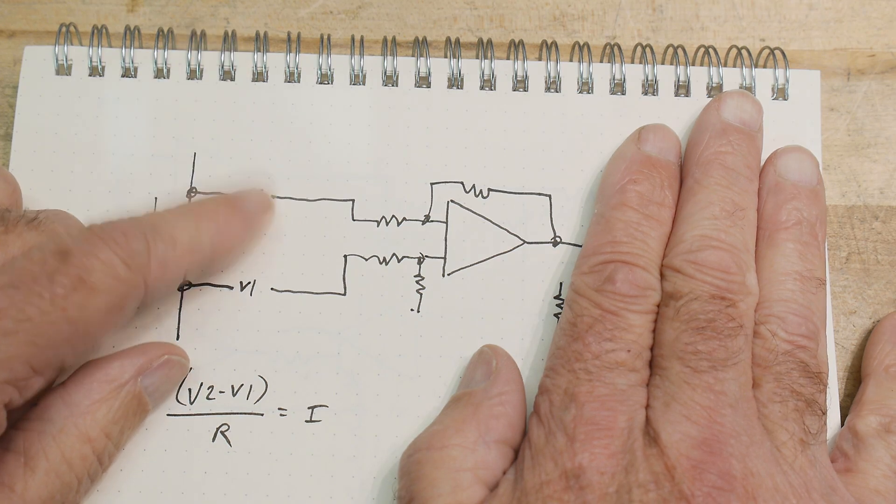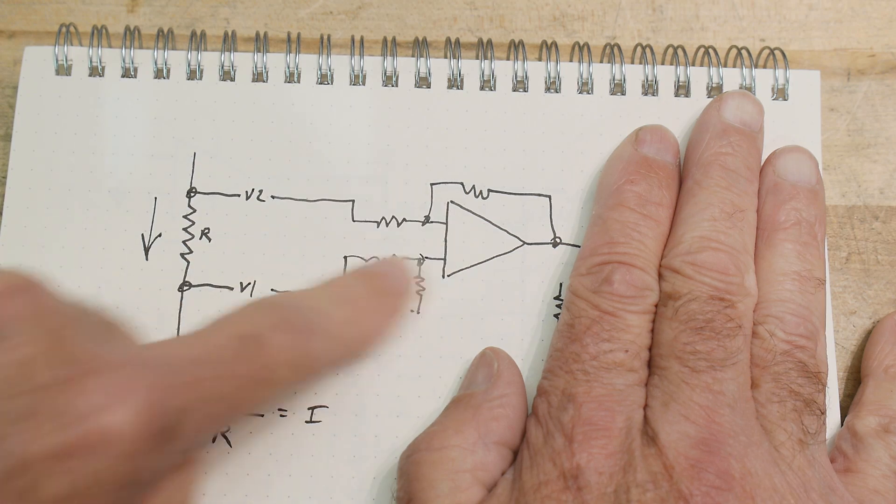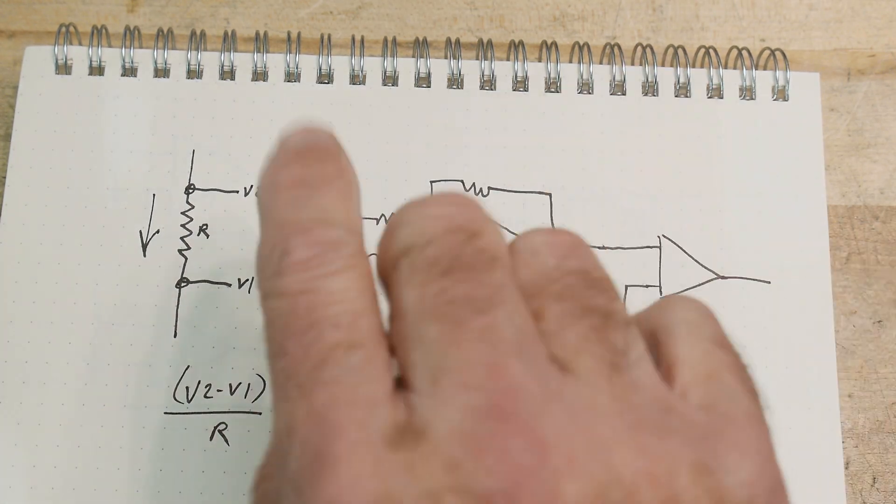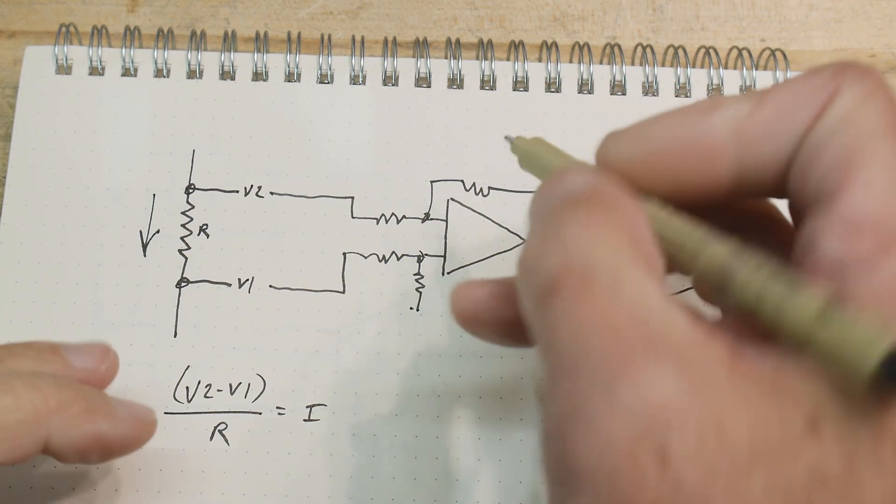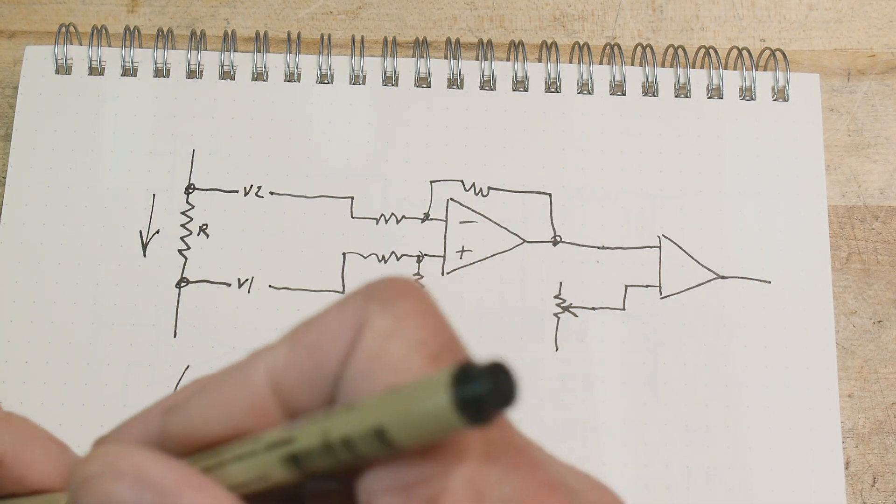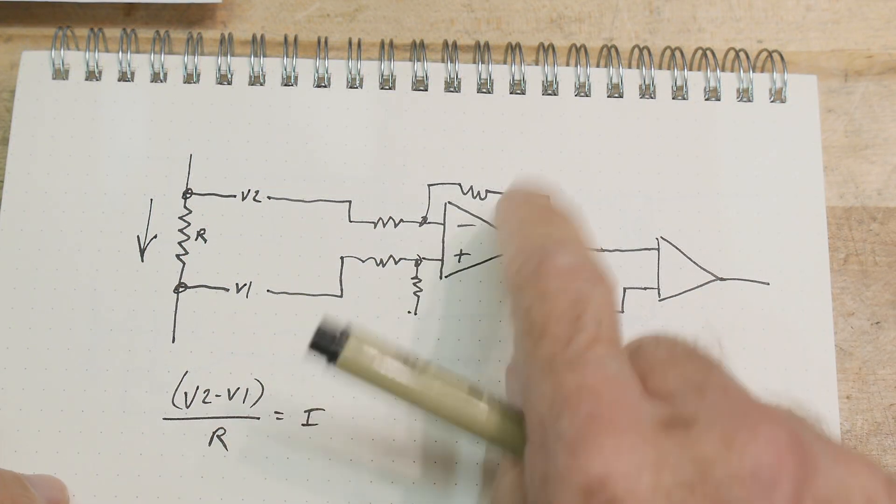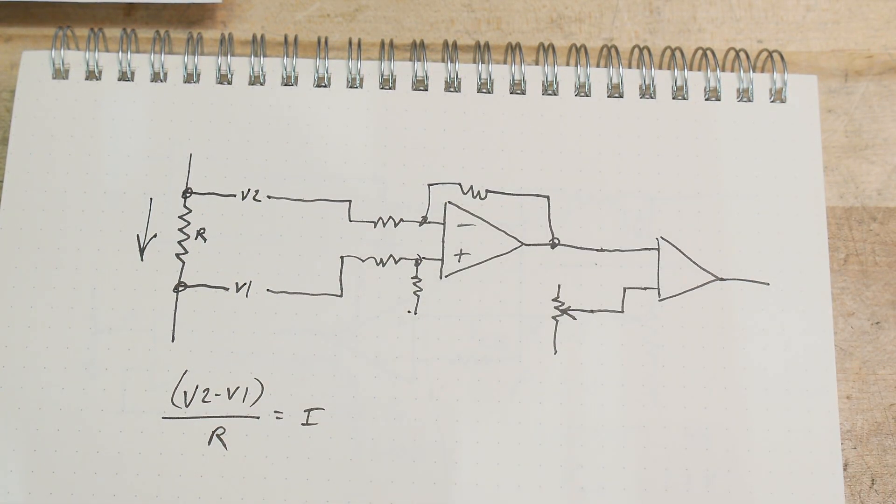Let's say this is 4.5 and this is 3.5, then it'll give us 1 volt on the output. So this is minus plus, I think, is that right? Yeah, that's right, minus on the top, plus on the bottom.